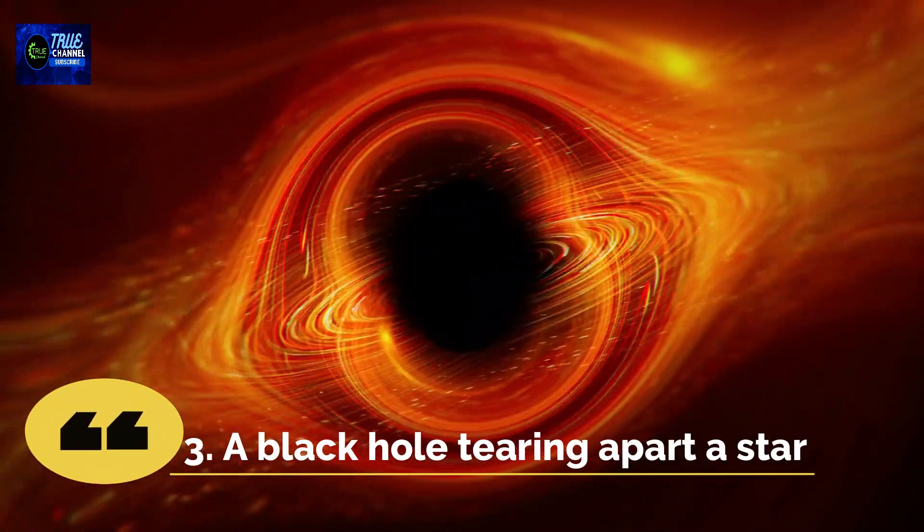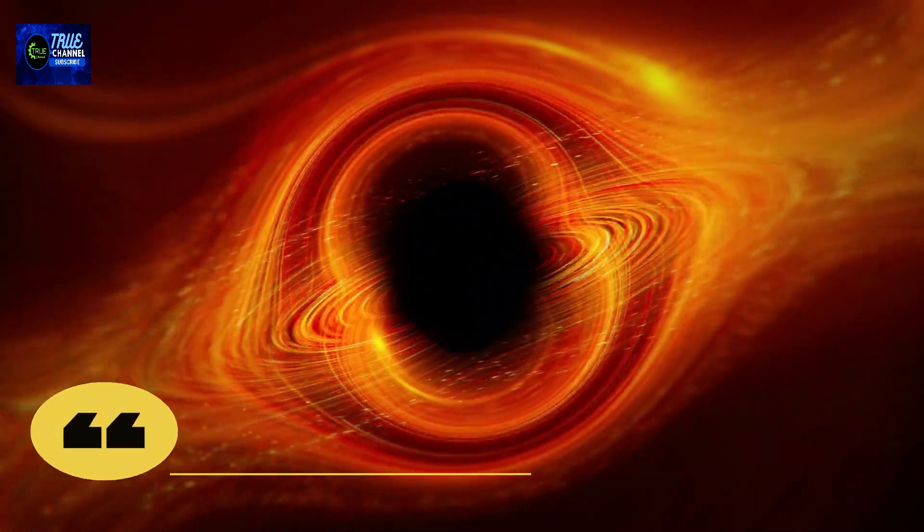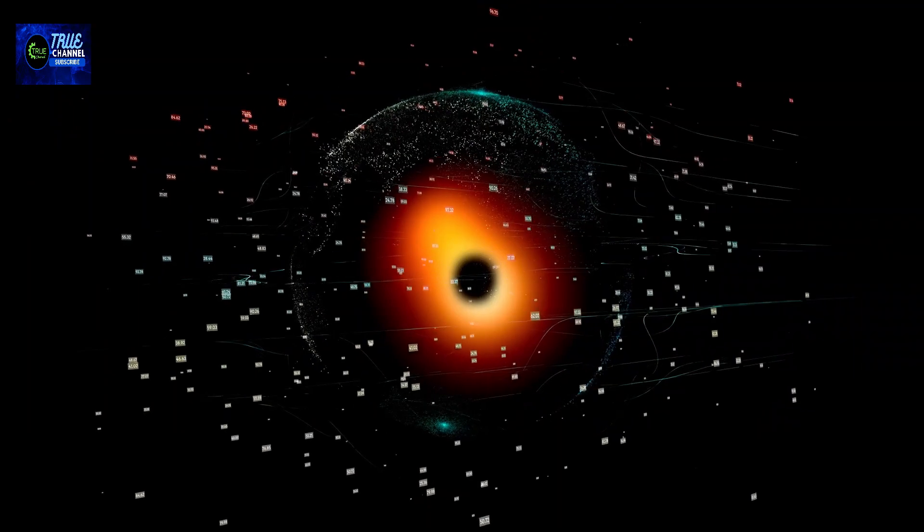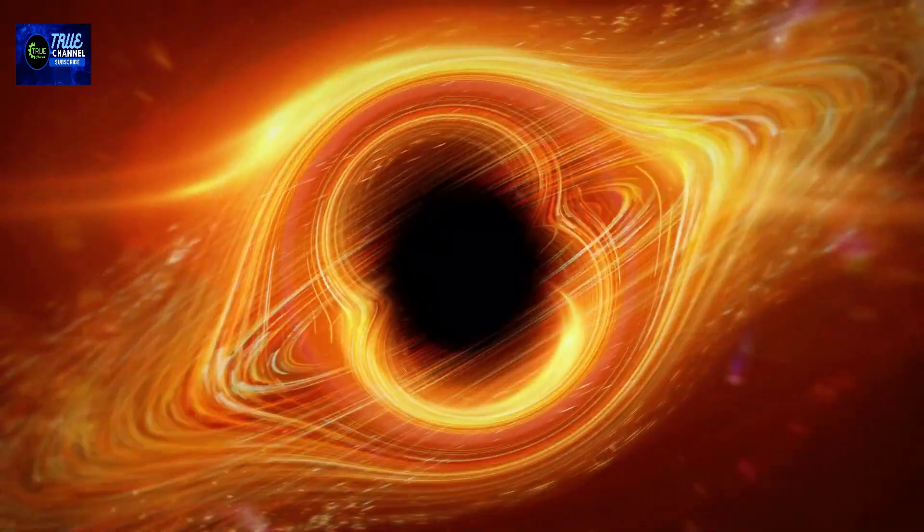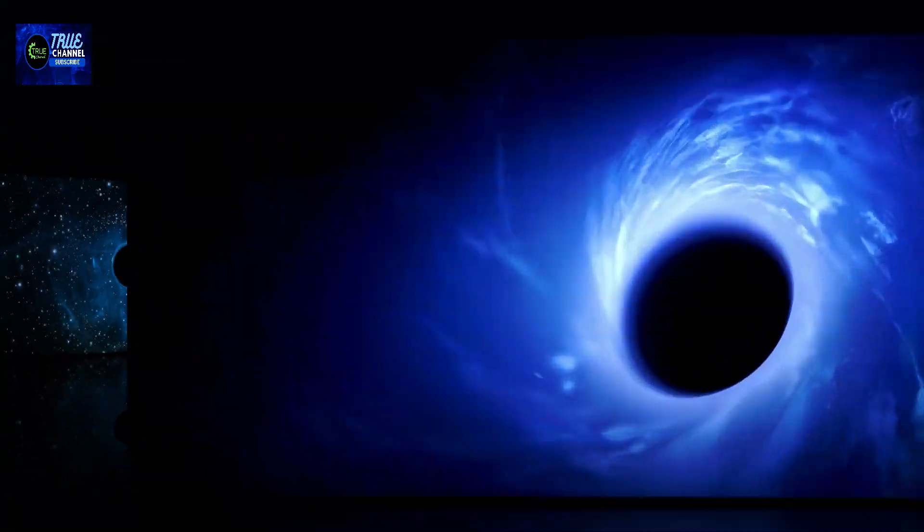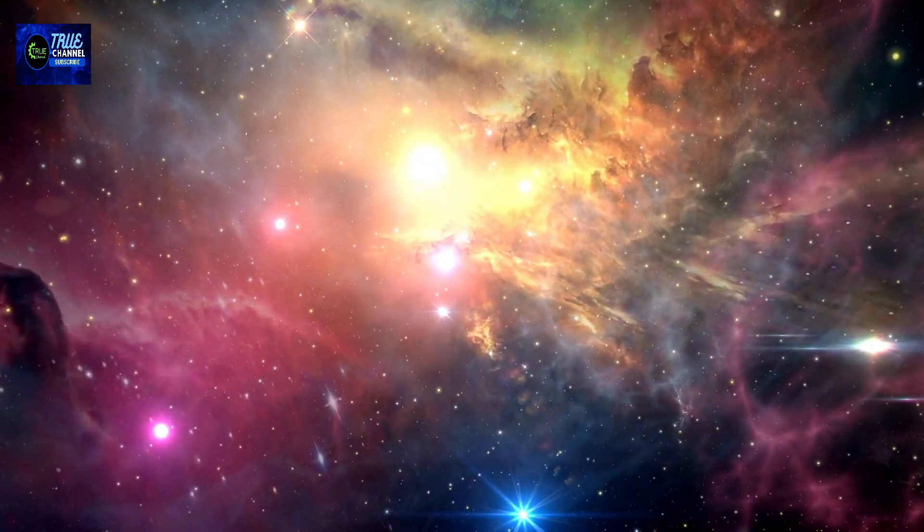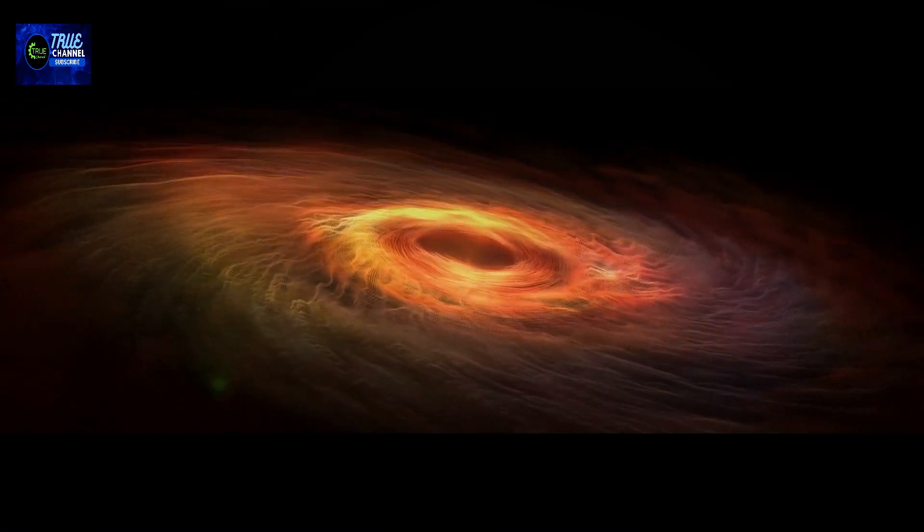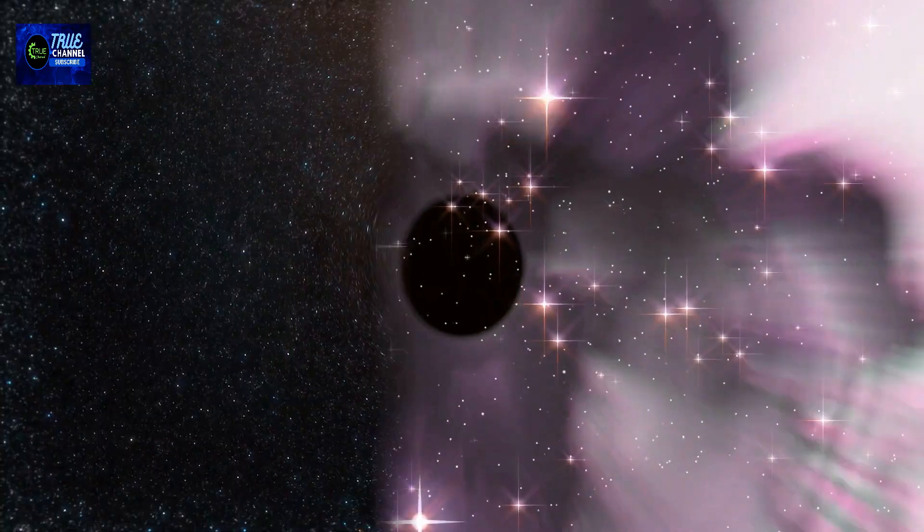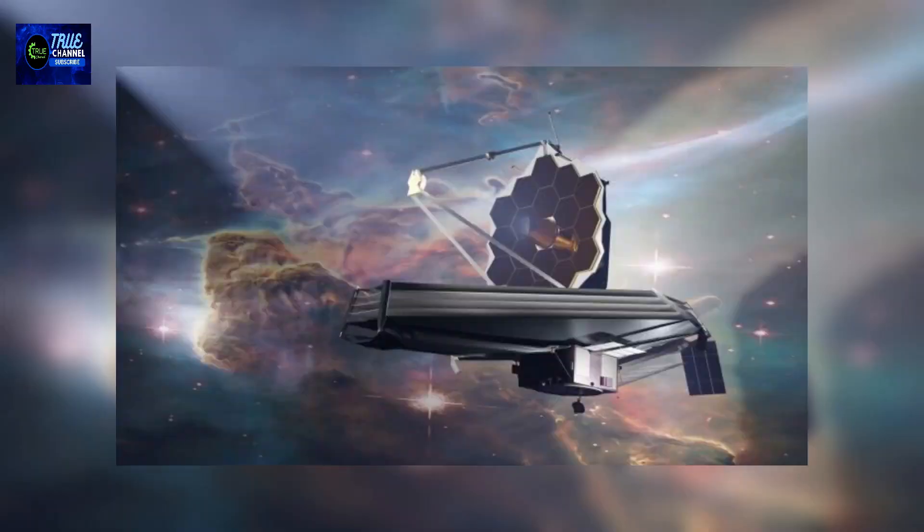Number 3: A Black Hole Tearing Apart a Star. One of the most fascinating phenomena that the James Webb Telescope has captured is the sight of a black hole tearing apart a star. This event, known as a tidal disruption event, occurs when a star passes too close to the black hole's event horizon and gets stretched by the immense gravitational forces of the black hole, resulting in its ultimate destruction.